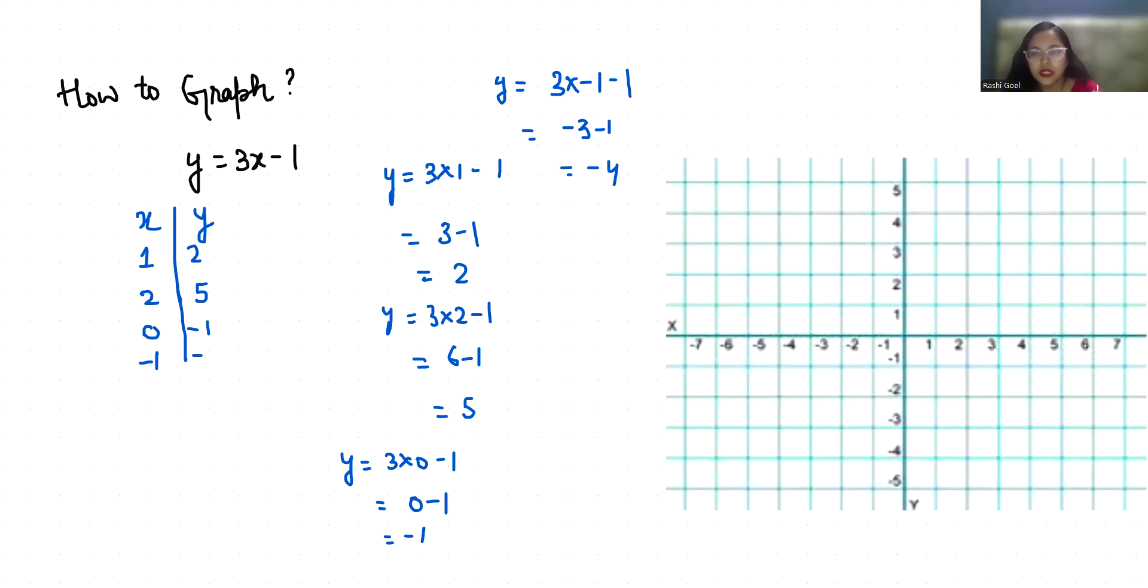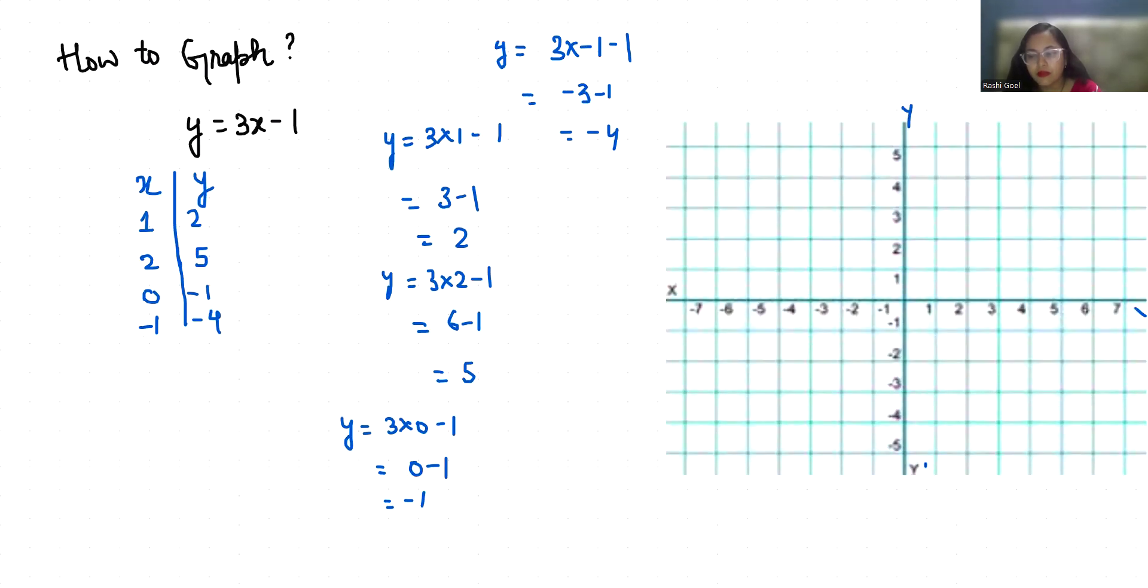Now let's plot these points. So this is our y-axis and this horizontal is our x-axis. So the first coordinate is 1, 2. 1 is on x-axis here and 2 is on y-axis.